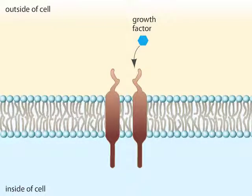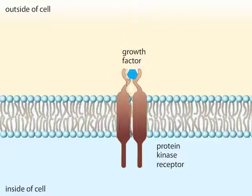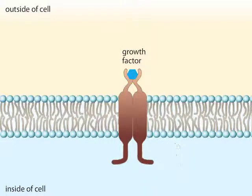A signal transduction pathway is a sequence of molecular events and chemical reactions that lead to a cell's response to a signal. This example of a pathway begins with the binding of a growth factor to a protein kinase receptor. The binding unites the two parts of the receptor, which then rearranges to expose protein kinase active sites on the receptor's cytoplasmic domains.